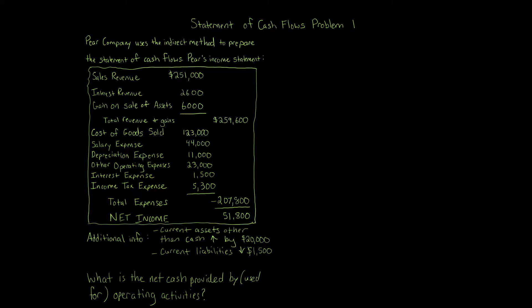We need to find the net cash provided by operating activities, focusing on the statement of cash flows. We're given an income statement and some additional information. We're told that they use the indirect method, so we're going to use that approach as well. We have to remember what goes under operating activities versus investing activities versus financing activities — current assets, current liabilities, their effects on net income, depreciation expense, and gain on sale of assets.